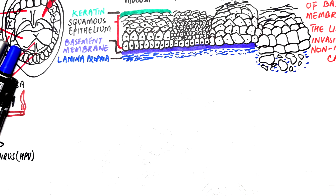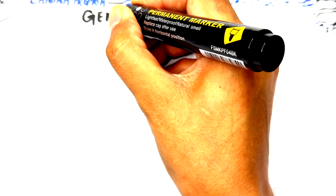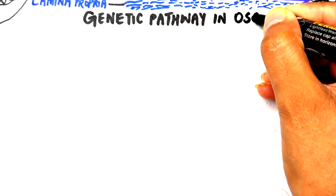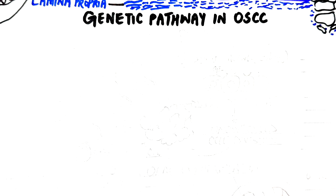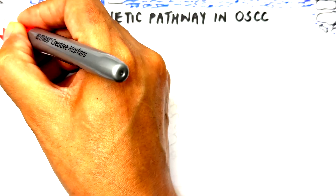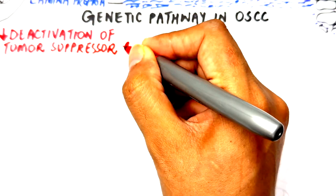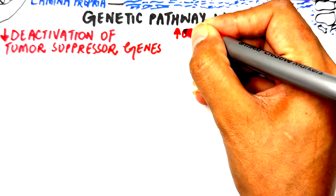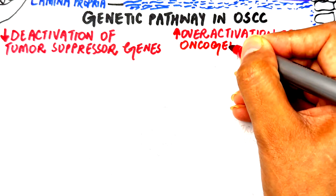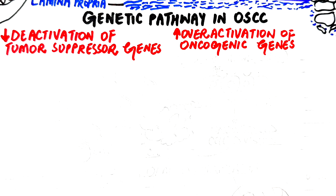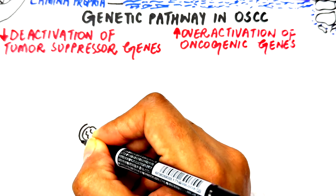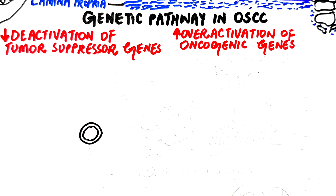On a molecular level, the normal balance between tumor suppressor genes that prevent tumors and oncogenes that promote cell growth is lost. Tumor suppressor genes like p53, the retinoblastoma (Rb) gene, and p16, which usually repair DNA or destroy abnormal cells, become inactivated or mutated.